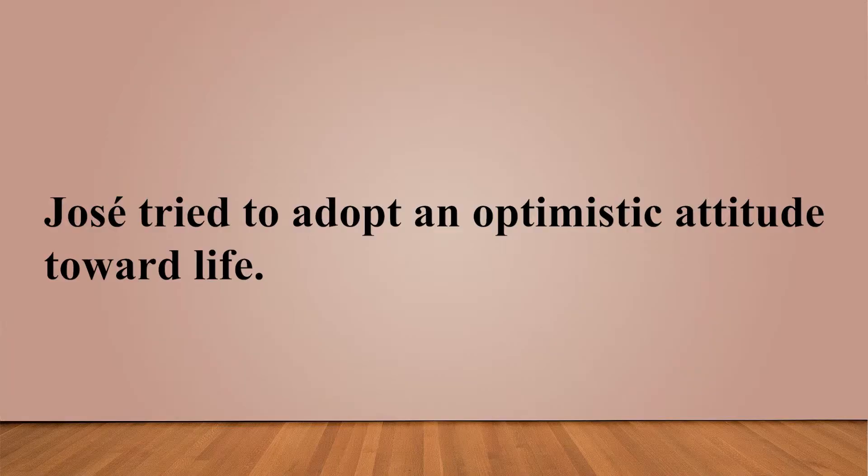第三题重要字词：乐观的——optimistic。例如：Jose tried to adopt an optimistic attitude toward life. 特别注意 Jose 这个名字是西班牙名字，J 发 H 的音，所以念作 Jose（音如 Ho-seh），不要念成 Jose 或 Joe-se。